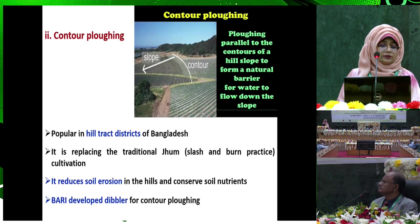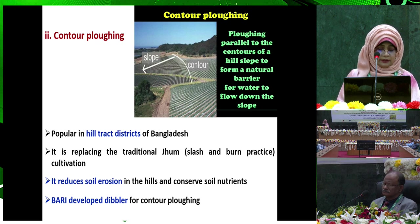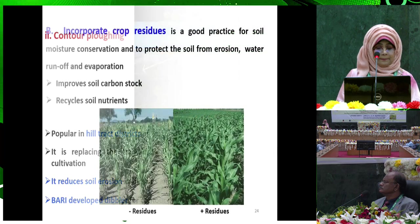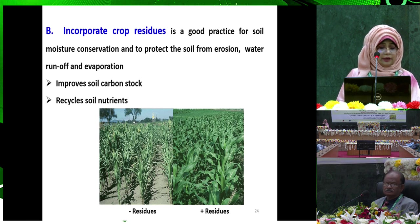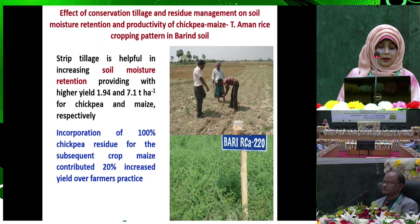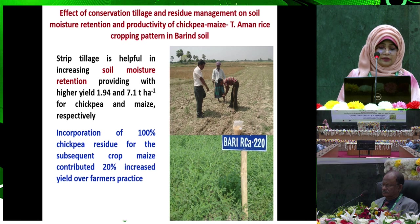Counter plowing, popular in the hill tracts of Bangladesh, is replacing traditional zone cultivation. It reduces soil erosion in hills and conserves soil moisture. BARI developed a D-plow for counter plowing. Incorporating crop residue is a good practice for soil moisture conservation and to protect soil from erosion, water runoff, and evaporation. It improves soil carbon stock and recycles soil nutrients. Research shows that strip tillage is helpful in increasing soil moisture, providing higher yields for chickpea and maize.